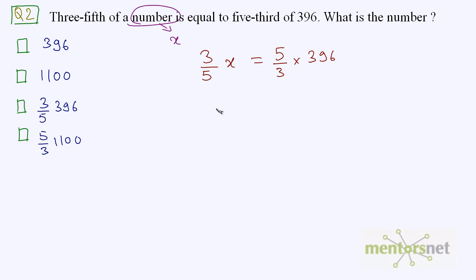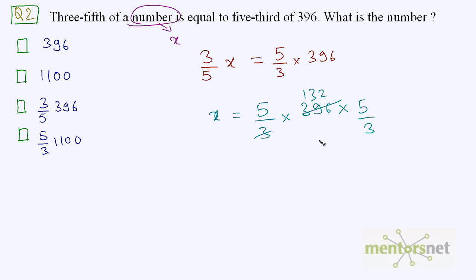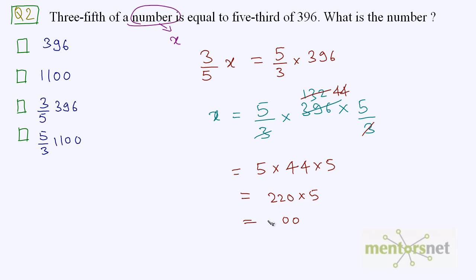We have to find the value of x. So x is equal to 5/3 into 396 into 5/3. We can divide 396 by 3: 3 times 132 is 396. And we can also divide 132 by 3, giving 44. So this is equal to 5 times 44 times 5, which is equal to 220 times 5. And 220 into 5 is equal to 1100. Therefore our answer is option 2.